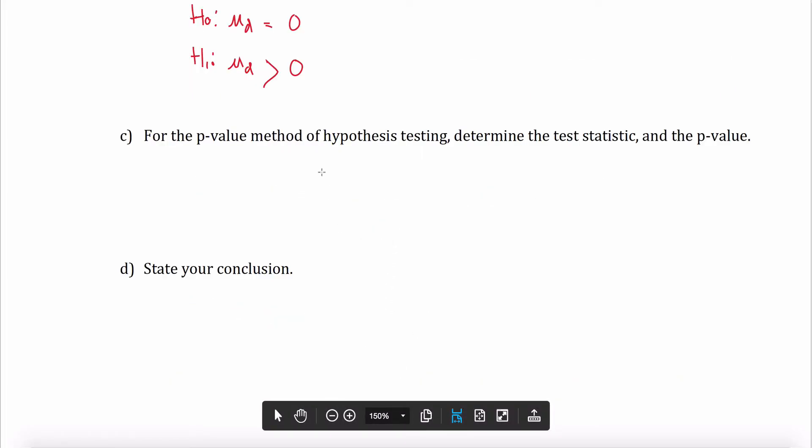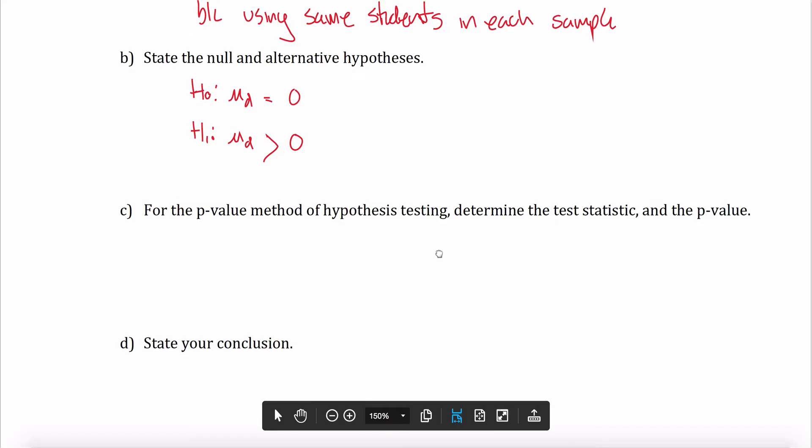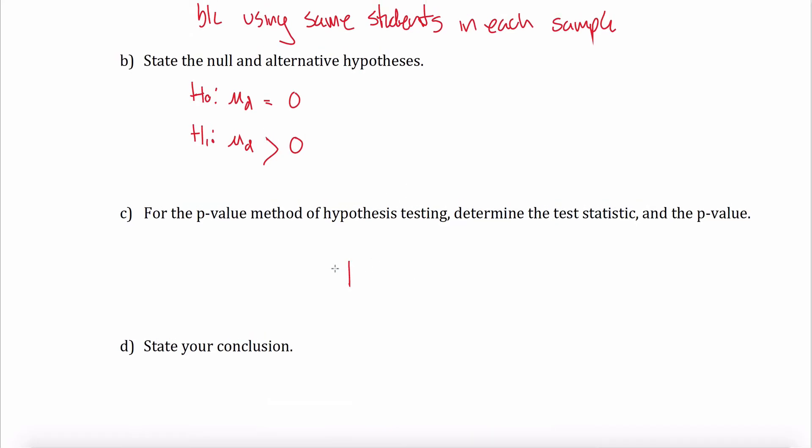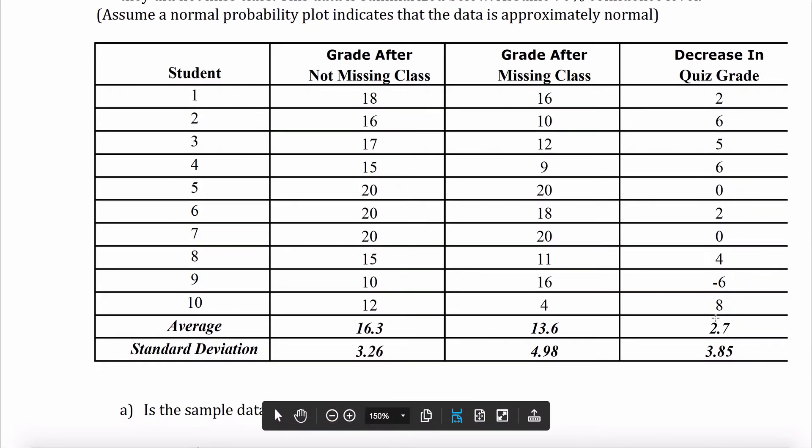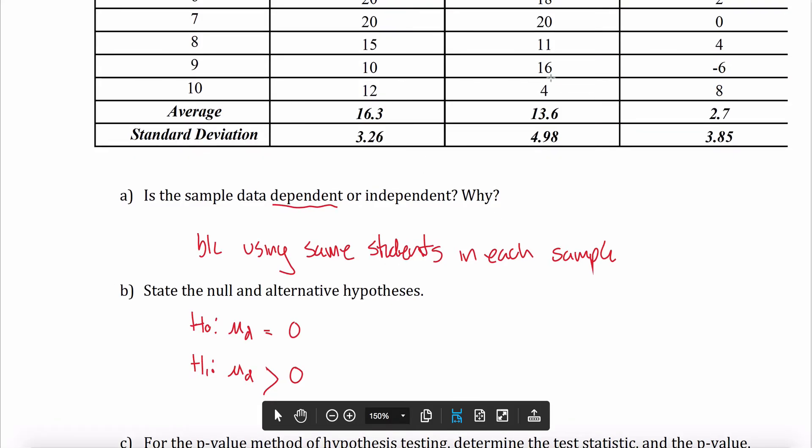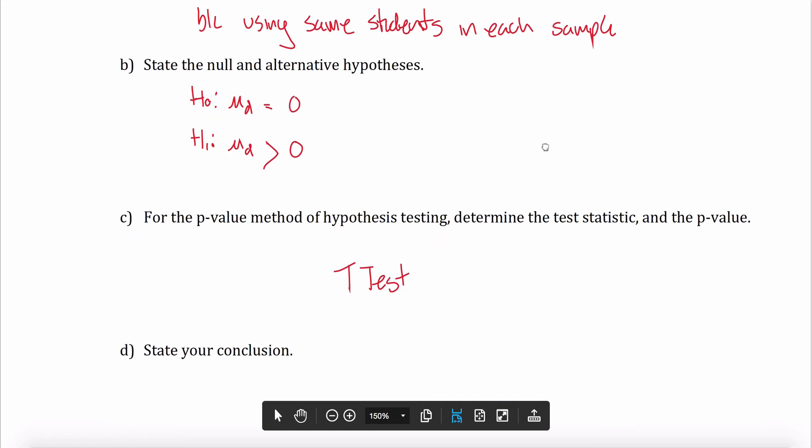So now what I want to do is use the p-value method, determine the test statistic and the p-value. Anytime I have dependent data, I'm just going to be using a t-test. So I hit the stat button and I go over to tests, and it's the second thing on my list that says t-test. And I can either give it the data or the statistics. In this problem, I gave you both. You could put in this data here, or you could put in these statistics about the data. I think it's easier to put in the statistics about the data. So I'm going to use this as x-bar sub d maybe, and this is the standard deviation of d. And I am going to type that into my calculator under the t-test menu. So I'll select stats.